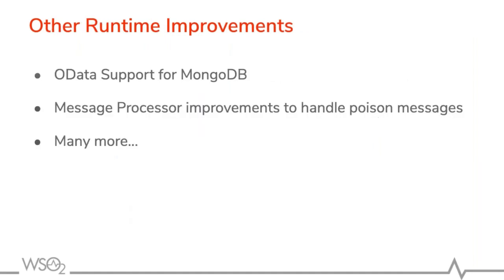Other runtime improvements include data support for MongoDB and improvements for message processors to handle poison messages. Previously, once a poison message entered a message processor, it went into a cycle that we were unable to remove it from. Now we have added the capability to handle and remove poison messages whenever needed. There are many more bug fixes and improvements for both the Enterprise Integrator and Micro Integrator runtimes, which you can view in our GitHub repository.